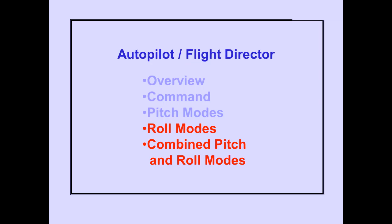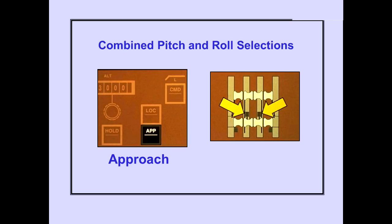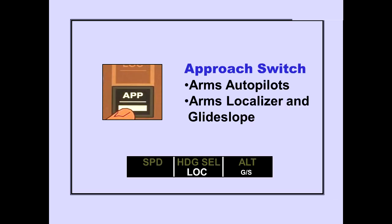Now let's discuss the combined pitch and roll modes. The combined pitch and roll mode selections are Approach and takeoff/go-around, or TOGA. First, let's discuss the approach selection. Pushing the approach switch arms the autopilot in the localizer and glide slope modes. Either the localizer or the glide slope may be captured first. Glide slope capture can occur when the intercept track angle is within 80 degrees of the localizer course. Localizer capture can occur when the intercept track angle is within 120 degrees of the localizer course.